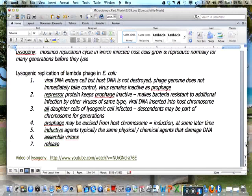The viral DNA is inserted into the host chromosome and daughter cells of lysogenic cells are infected. Descendants may be part of the chromosome for many generations.